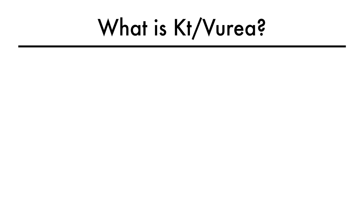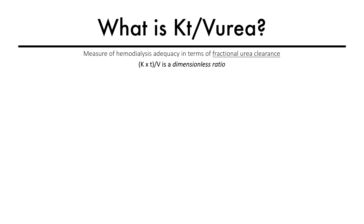Now, let's talk about KT over V urea. Urea clearance is the preferred method to assess hemodialysis dose and adequacy. KT over V urea measures hemodialysis adequacy in terms of fractional urea clearance.